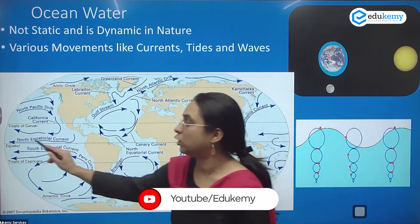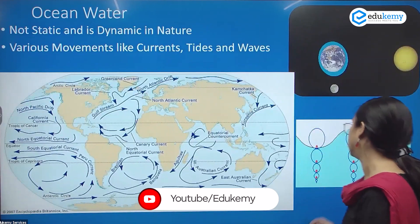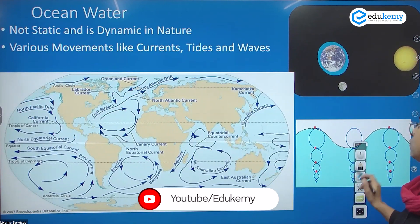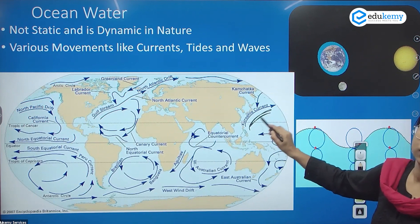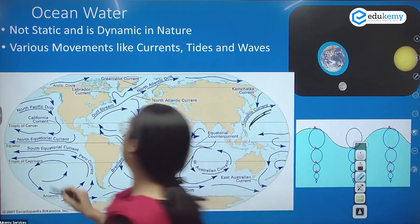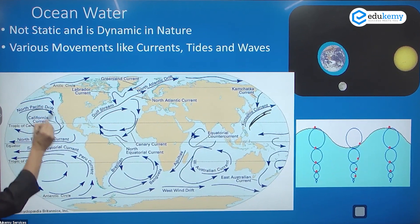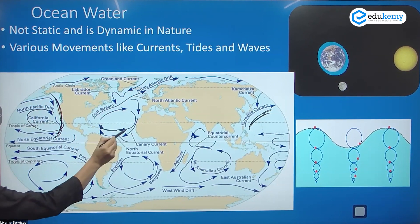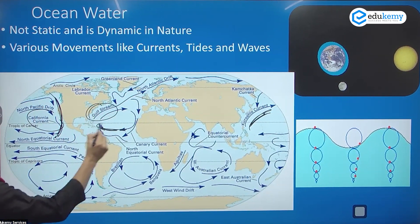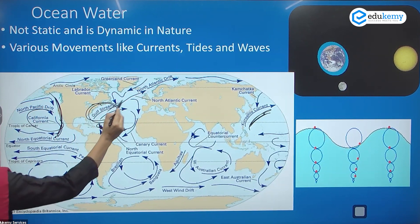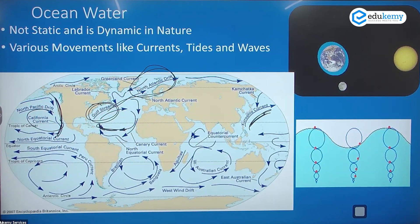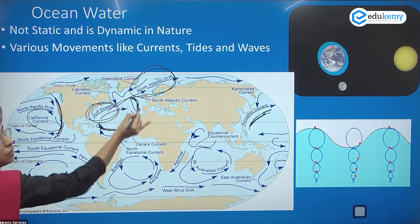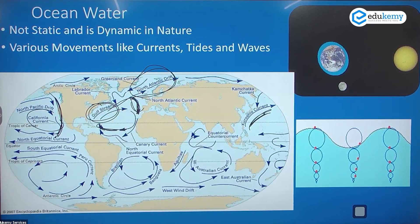The North Equatorial Current is a warm current. The Kuroshio Current is a warm current, but the Californian Current coming from above is a cold current. Here also, the North Equatorial Current is a warm current, the Gulf Stream is a warm current, and part of the Gulf Stream becomes the North Atlantic Drift — also a warm current — but then it becomes a cold current. Similarly, the Brazilian Current is a warm current, but the Benguela Current is a cold current.